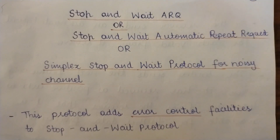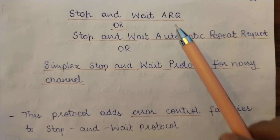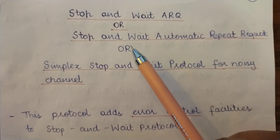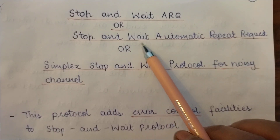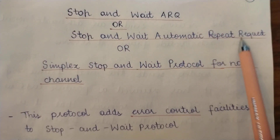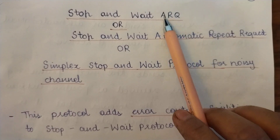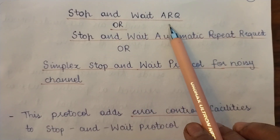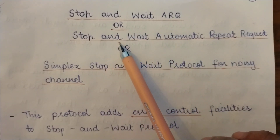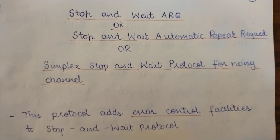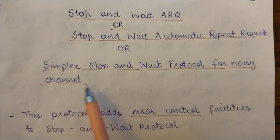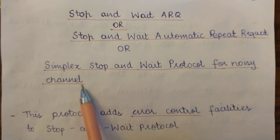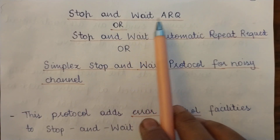Today we are going to study the Stop and Wait ARQ protocol of the data link layer. This protocol is also known as Stop and Wait Automatic Repeat Request — ARQ stands for Automatic Repeat Request. You can call it Stop and Wait ARQ, Stop and Wait Automatic Repeat Request, or simplex Stop and Wait protocol for noisy channel. Most commonly it is known as Stop and Wait ARQ.